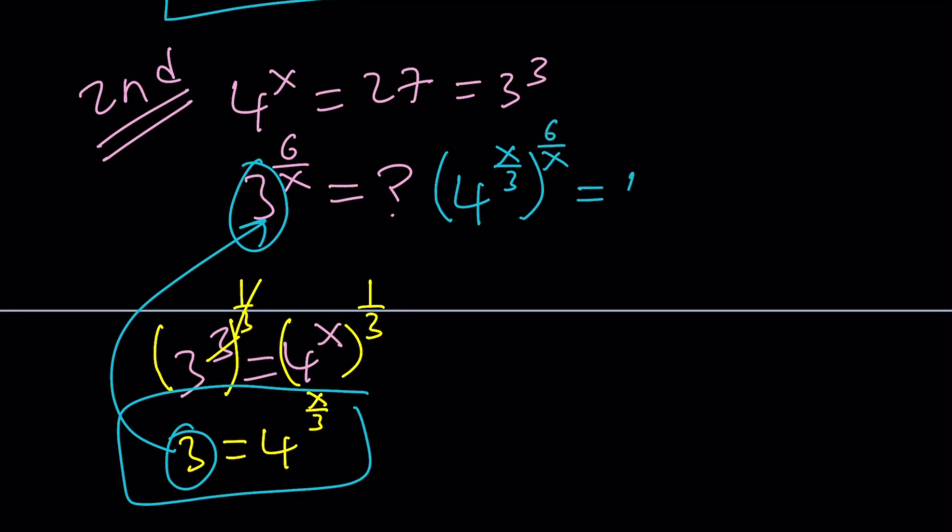As you know, the powers are going to be multiplied. So it's going to be 4 to the power of x over 3 times 6 over x. And x cancels out, leaving us with 4 to the power of 6 3rd or 2, which is 4 to the 2nd power. And that is equal to 16.